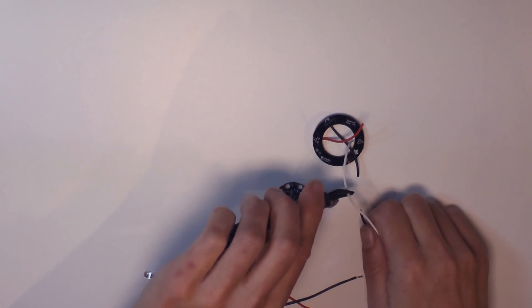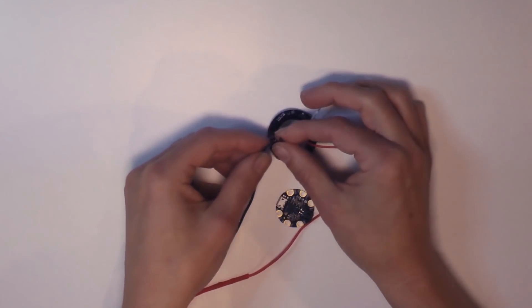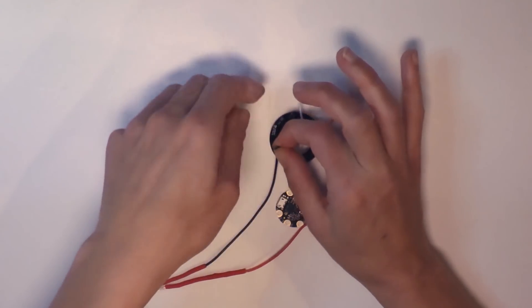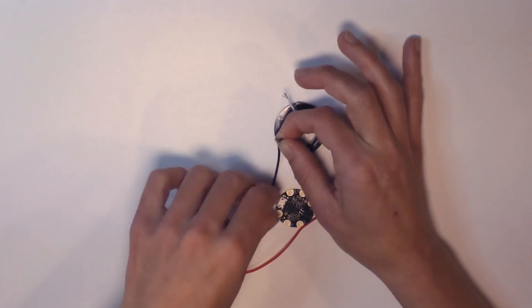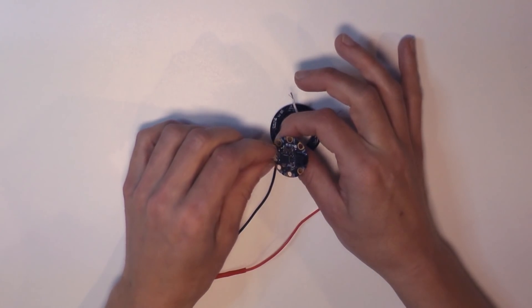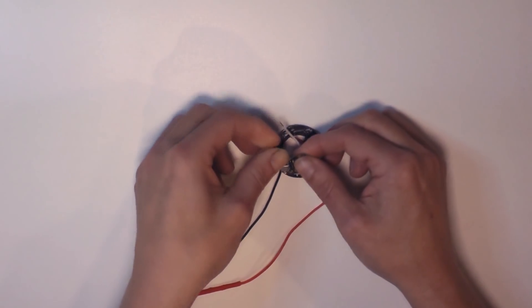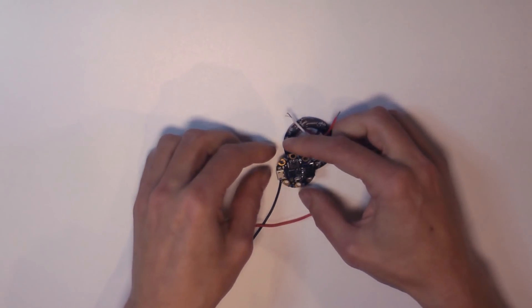Trim the wires and pull them through the ring and then solder to the Gemma. Check out our wiring guide in our full tutorial on the Adafruit Learning System for more details.